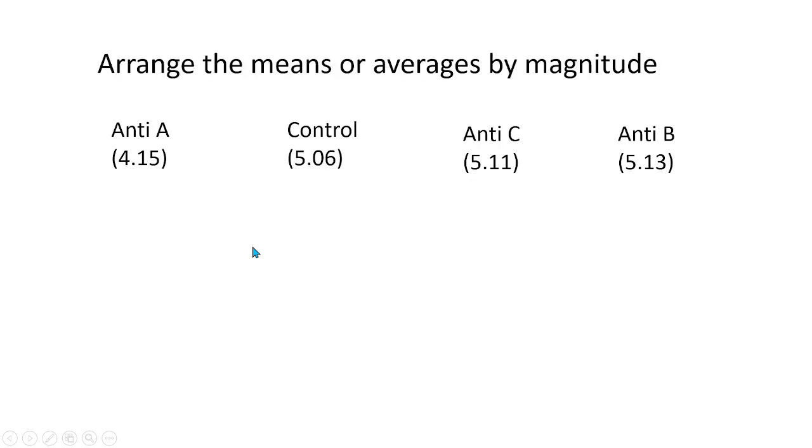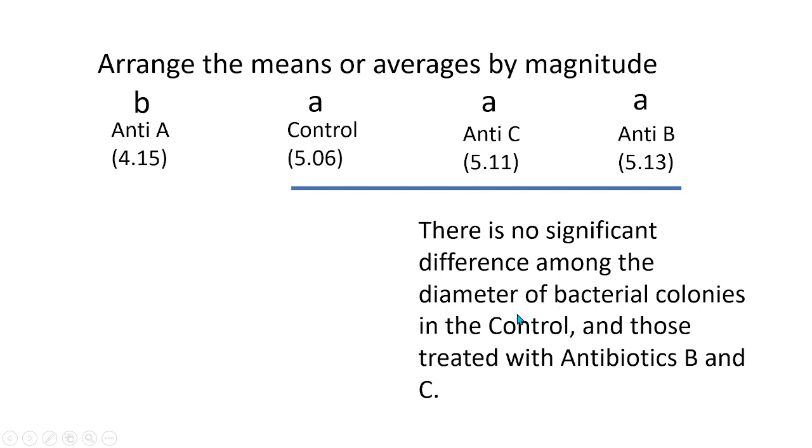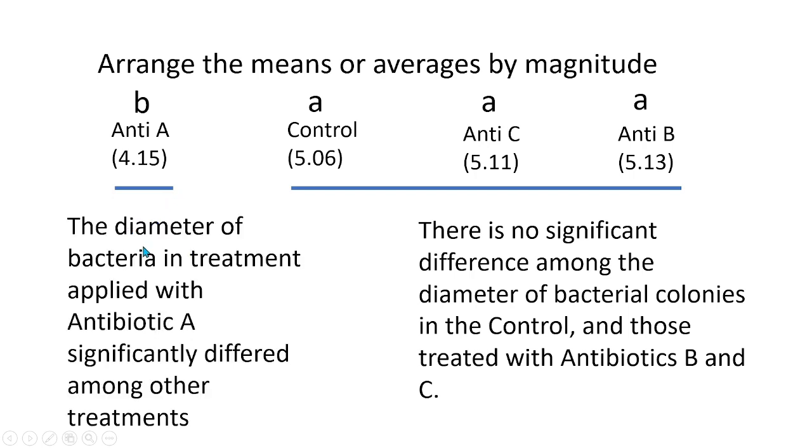Another way to present the results is by arranging the averages by magnitude. So antibiotic A has the lowest average followed by the control, then antibiotic C and B. So this was our superscript in the previous slide. Then what we can do is to draw a straight line below the control and connecting to antibiotic C and B. This suggests that there is no significant difference among the diameter of bacterial colonies in the control and those treated with antibiotics B and C. So this line suggests that these three are equals. Then a line here under antibiotic A means that the diameter of bacteria in treatment applied with antibiotic A significantly differed among other treatments because this line is just below antibiotic A and is not connected to the other groups.